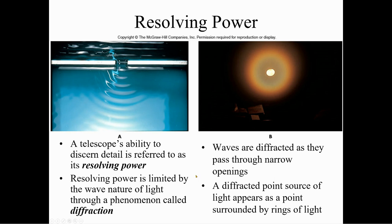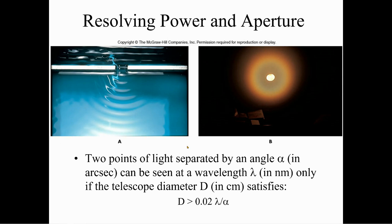Resolving power — a telescope's ability to discern detail is referred to as resolving power. Resolving power is limited by the wave nature of light through a phenomenon called diffraction. Waves are diffracted as they pass through narrow openings. A diffracted point source of light appears as a point surrounded by rings of light. Two points of light separated by an angle can be resolved at a given wavelength only if a telescope diameter satisfies this equation.